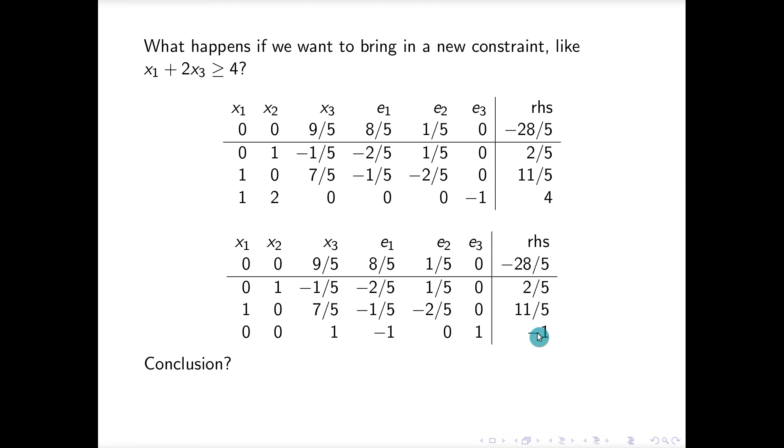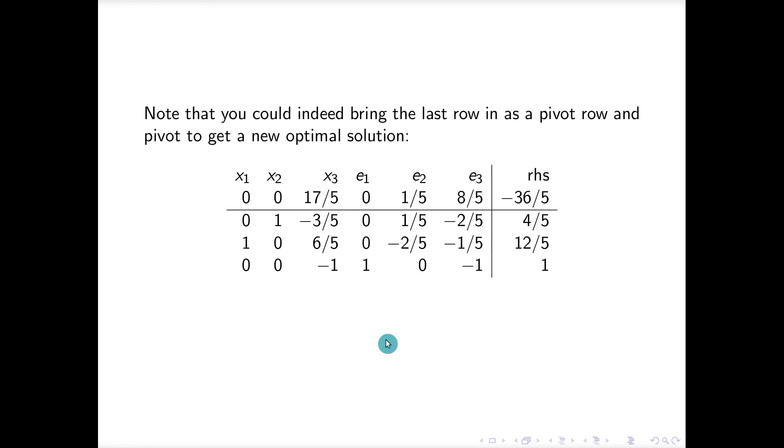However, what's nice about the dual simplex method and the reason we're talking about it at this point is we can go ahead and continue this problem. What variable would come into our basic solution now if I were to continue? Well, I only have one negative value here and so e1 would be coming in and e3 would be going out, and I could do the pivot right here.